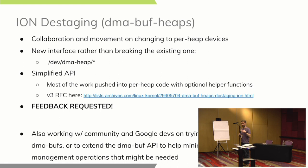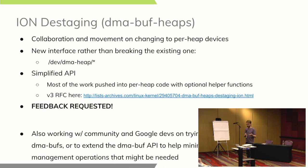The idea is, instead of having a big multiplexer in the ion interface where you had to query for the heaps and then pick which ones you wanted to use, we're breaking it up so we have per-heap device nodes. You'll have something like dev DMA heap system, dev DMA heap CMA, and whatever custom heap you might want. This simplifies the API but also gives a lot more flexibility to the heap implementation because they get to implement the DMA buf ops.